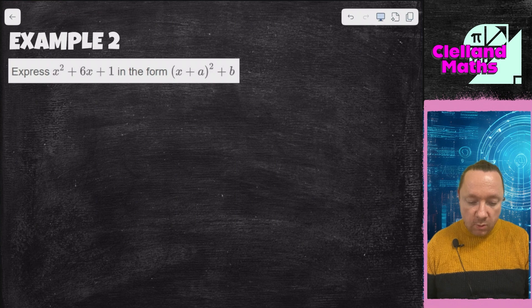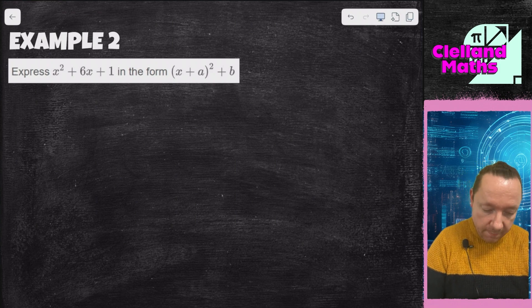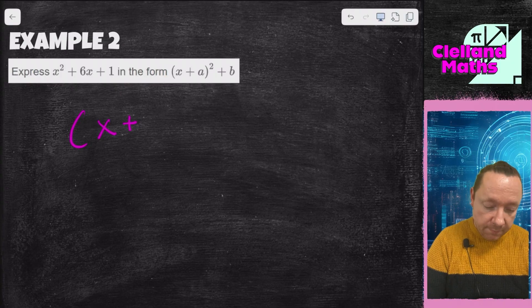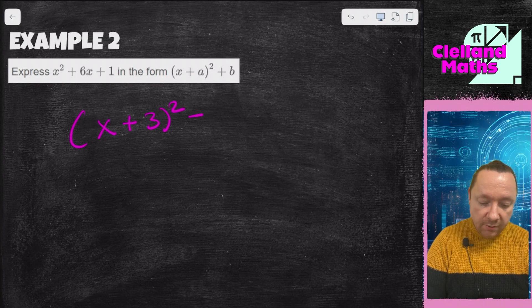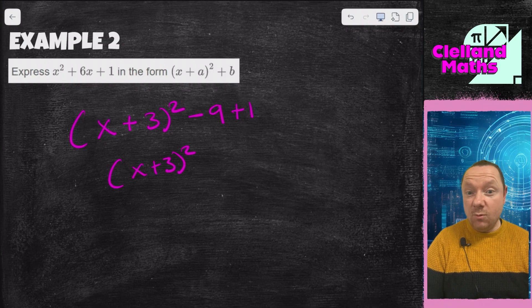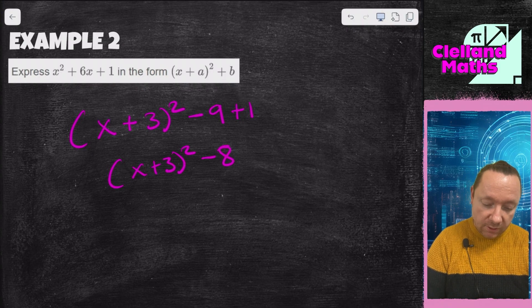Example 2, express x squared plus 6x plus 1 in the form x plus a squared plus b. So again, x plus half of 6 is 3 all squared. I immediately take away 3 squared which is 9, but I've got plus 1. x plus 3 all squared, minus 9 add 1 is minus 8. And we're done there.